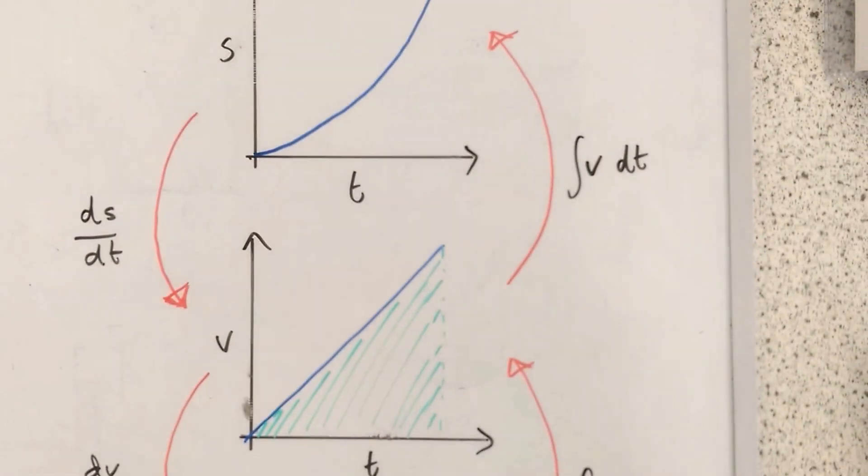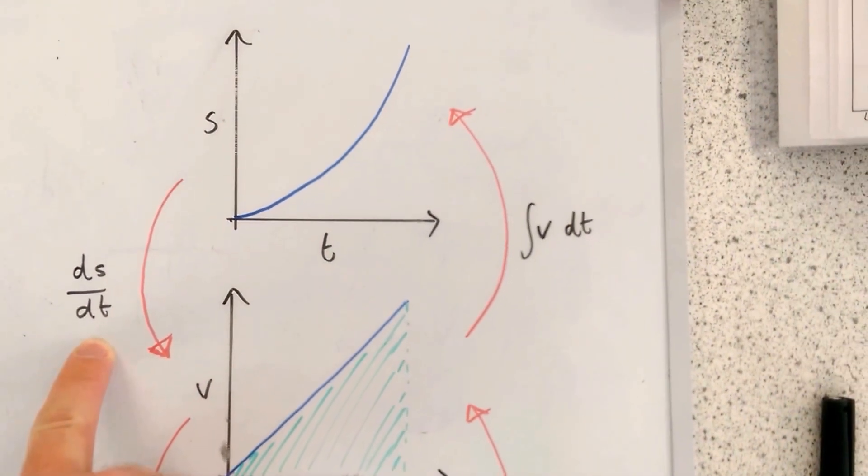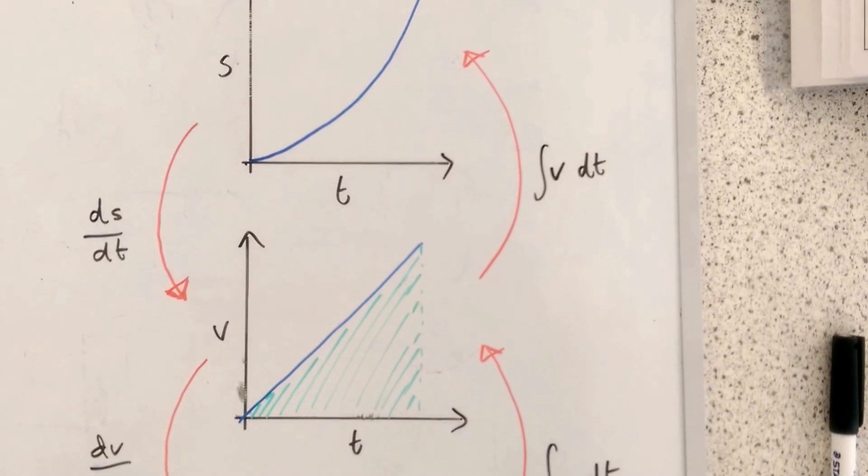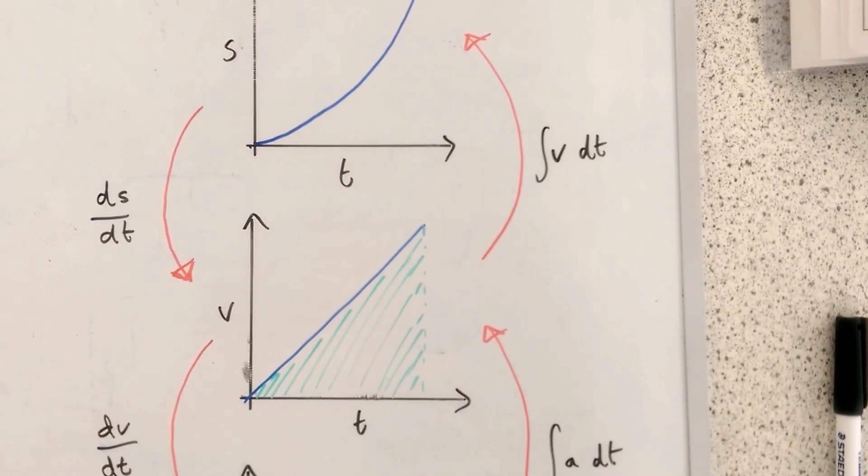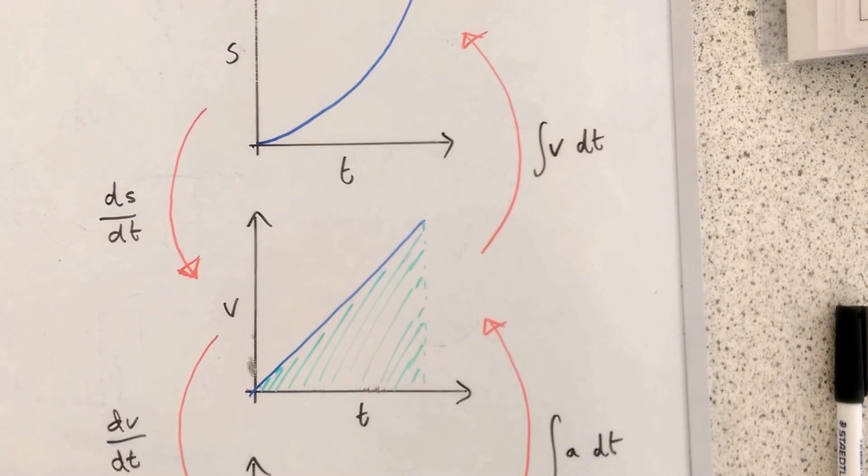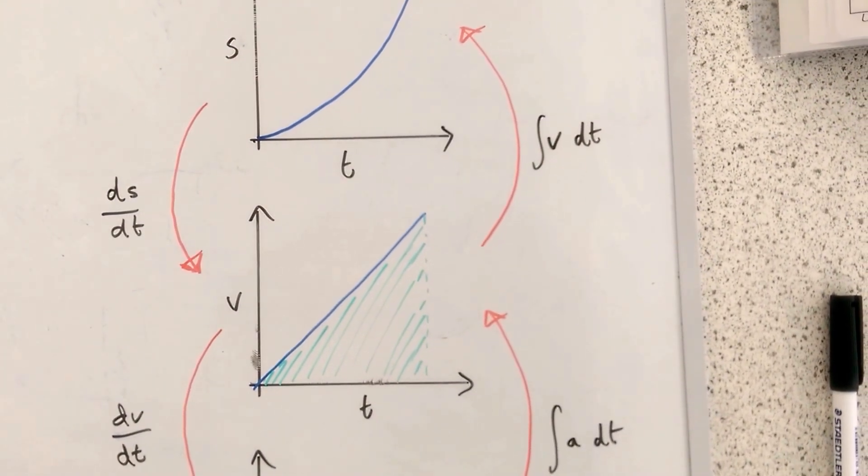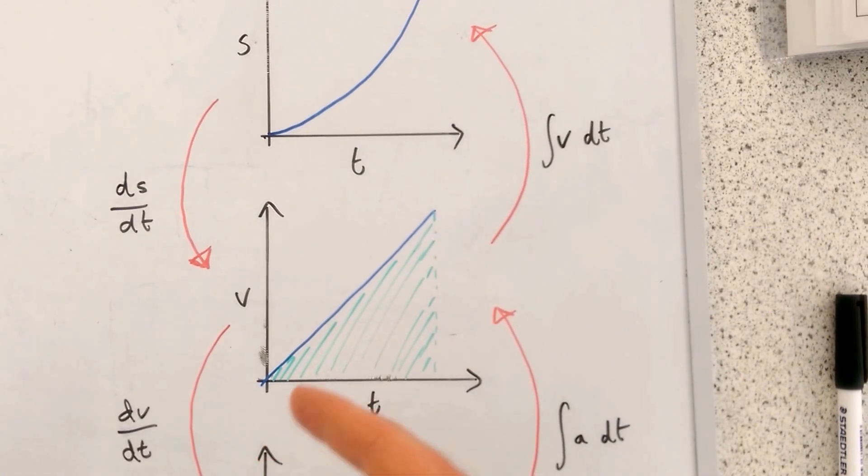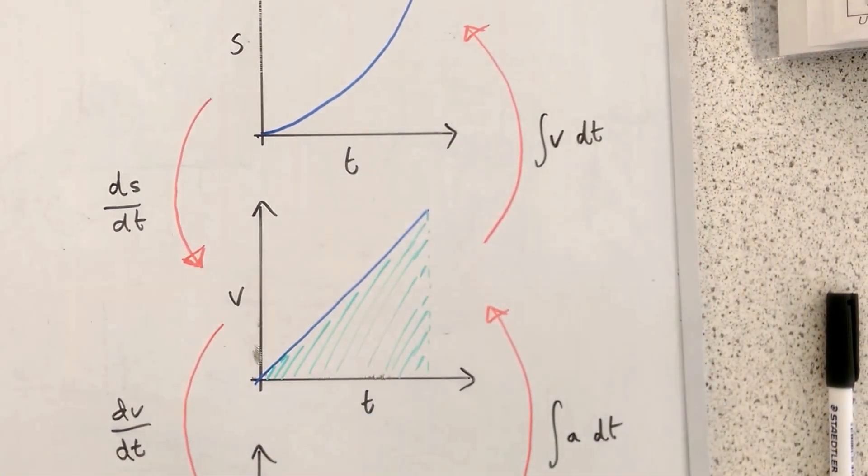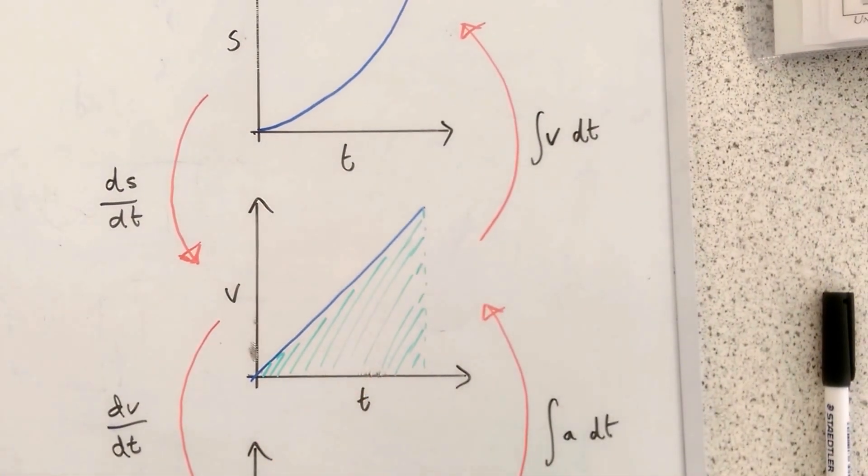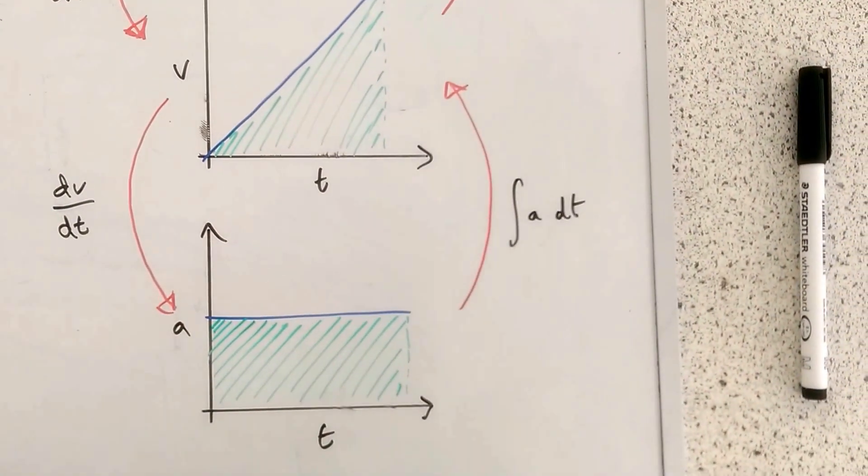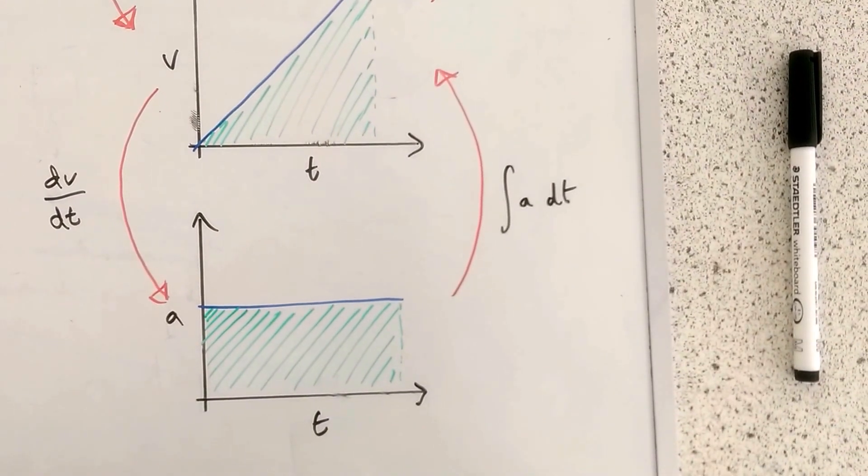So this little bit of notation here means the difference in s by the difference in t, which is the gradient, in other words, of that first graph. So from that first graph we can get to this second graph, the velocity time graph. And you can hopefully see that the velocity is steadily increasing. Now, from that graph we can do the difference in velocity by the difference in time, which change in velocity over time is acceleration.